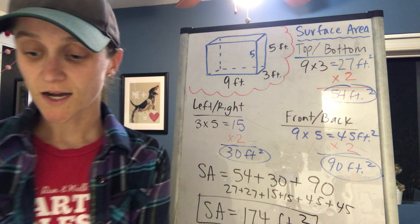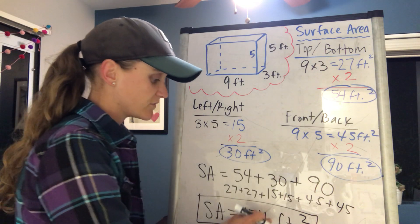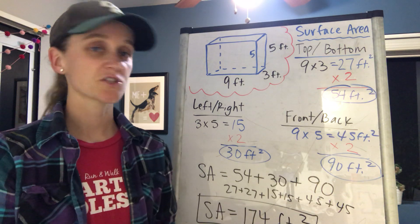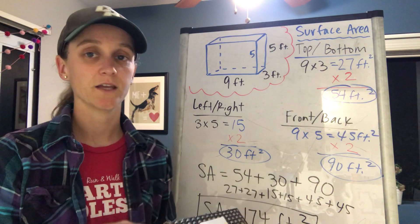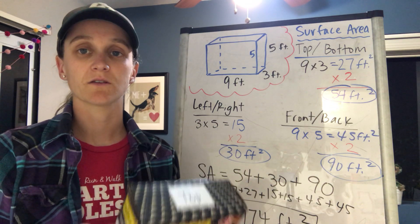So it's saying that around the entire rectangular prism, there are 174 little squares, one foot by one foot, that would cover this entire thing. So I kind of think about surface area like if I was gonna make a blanket for my shape, how big would the blanket need to be to cover everything.